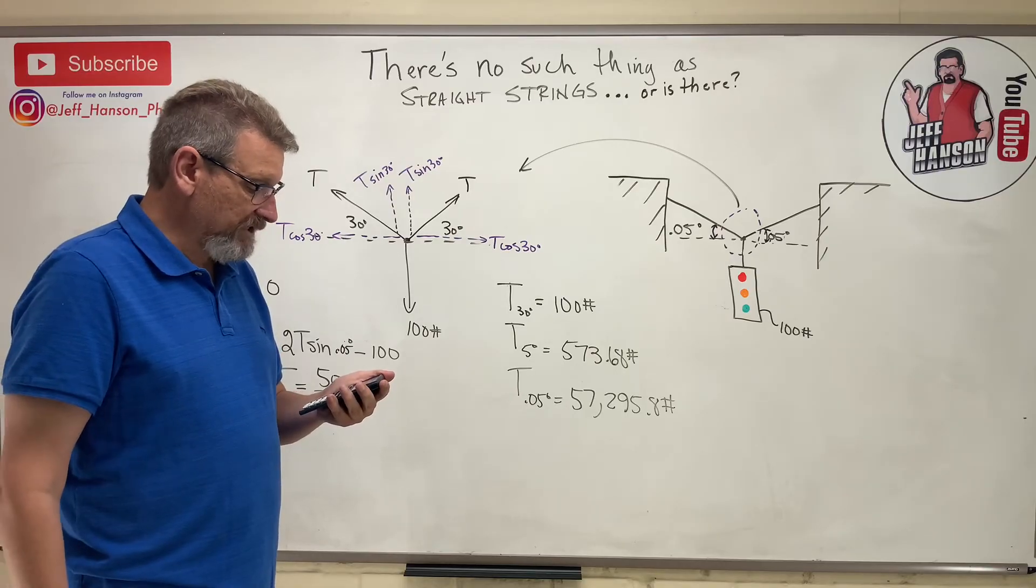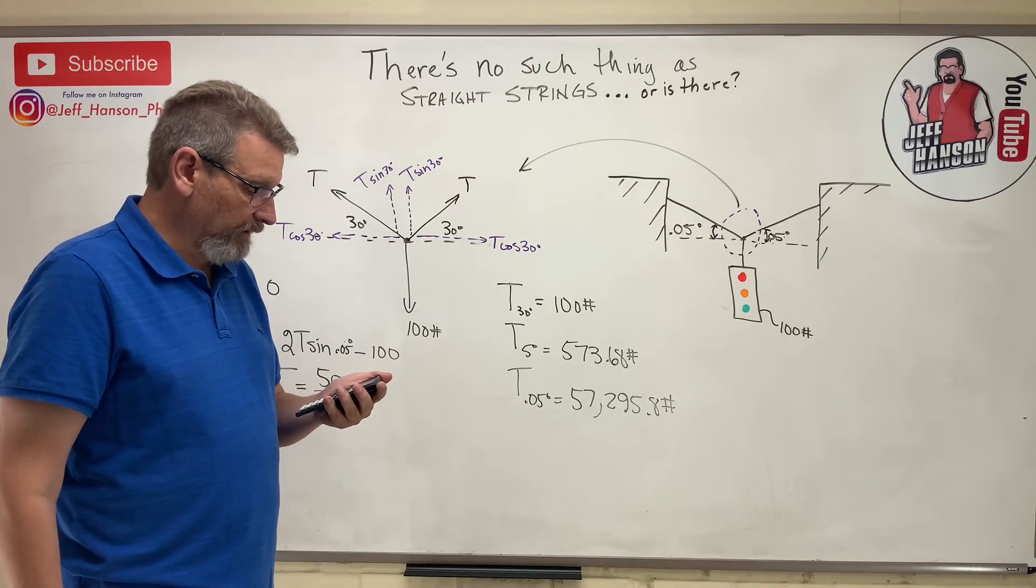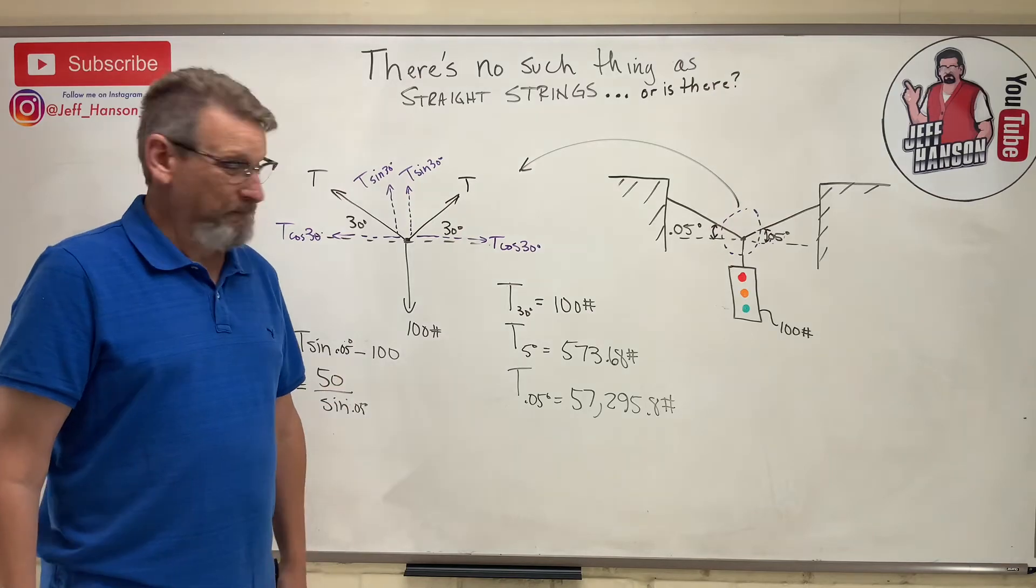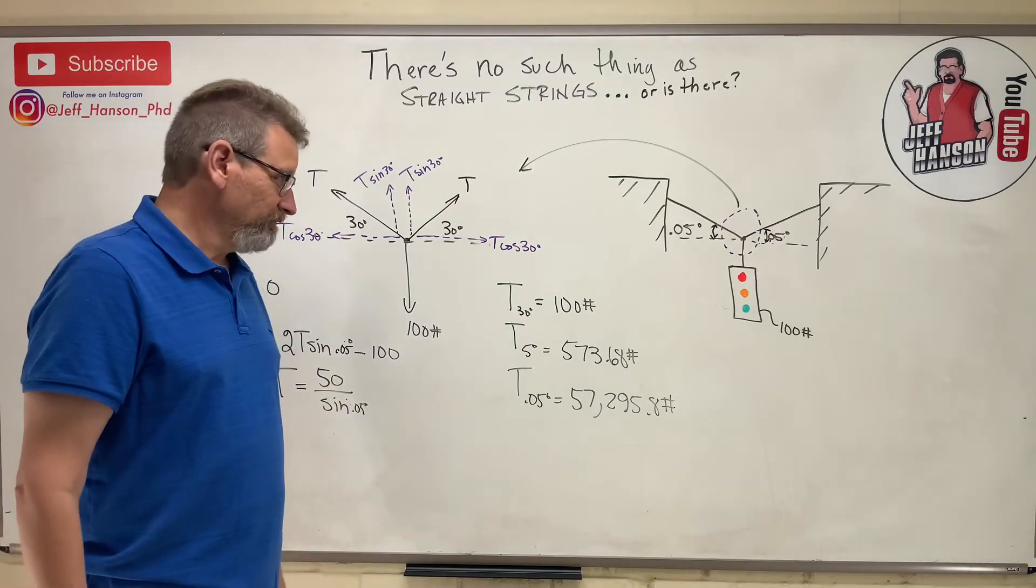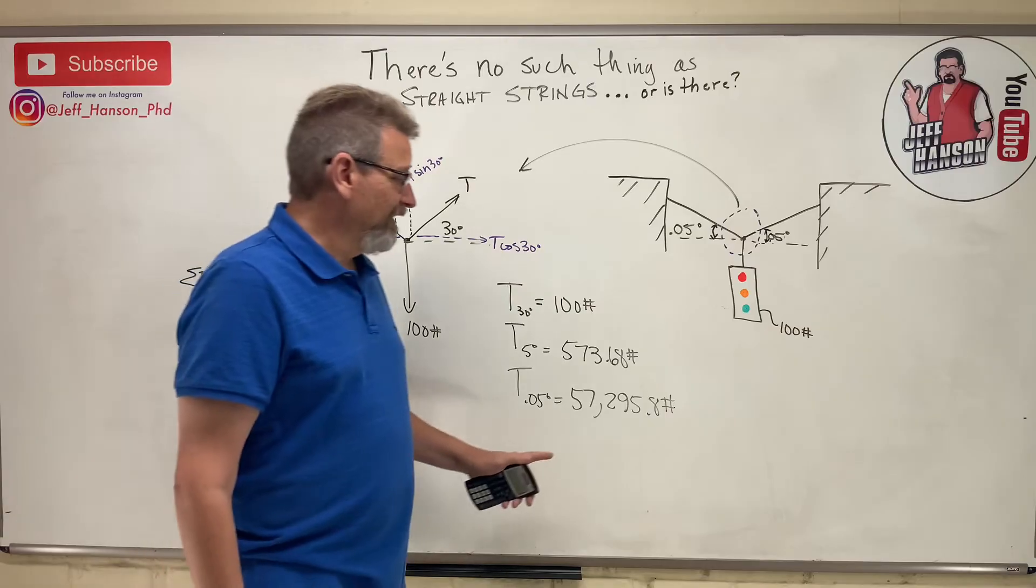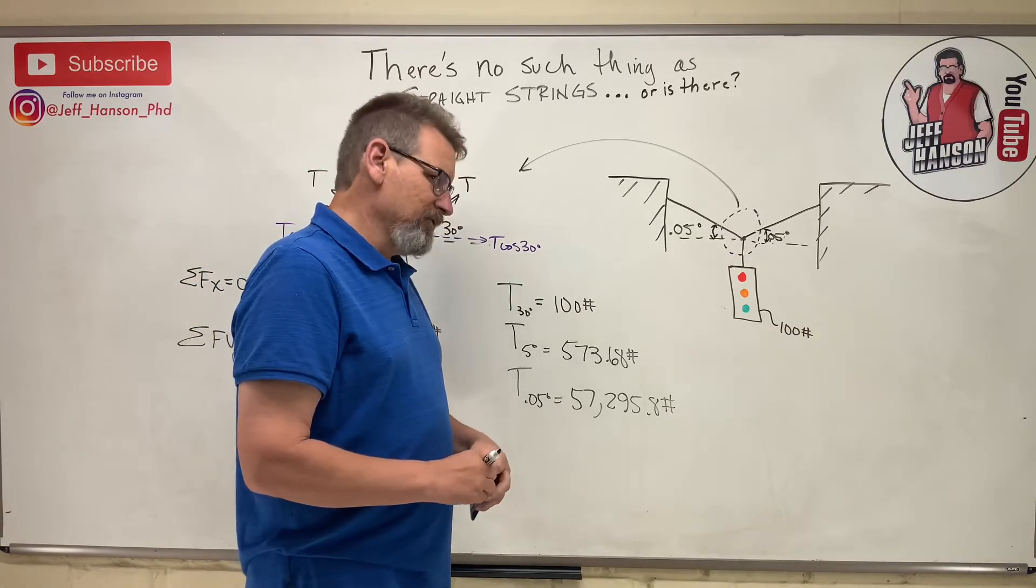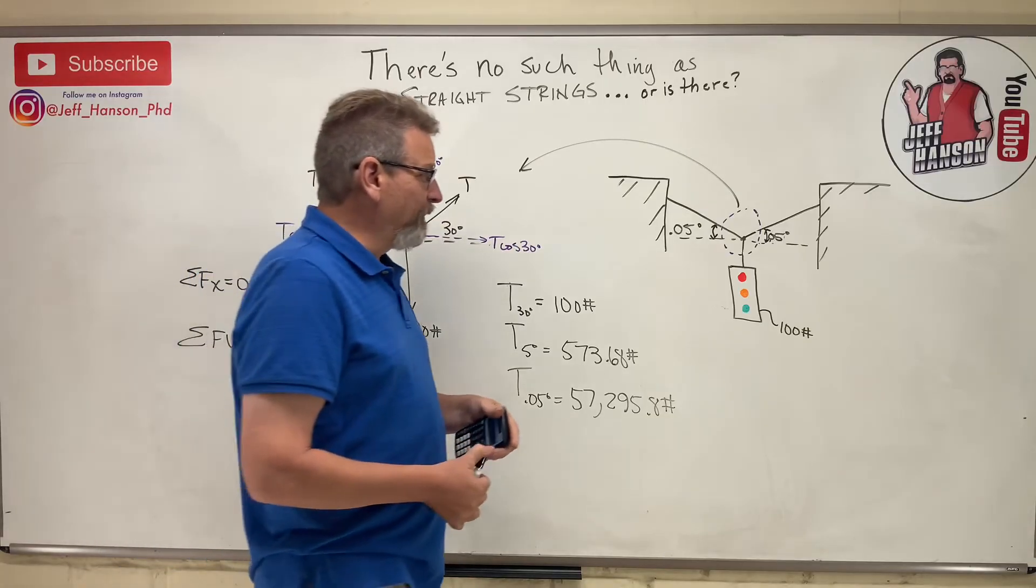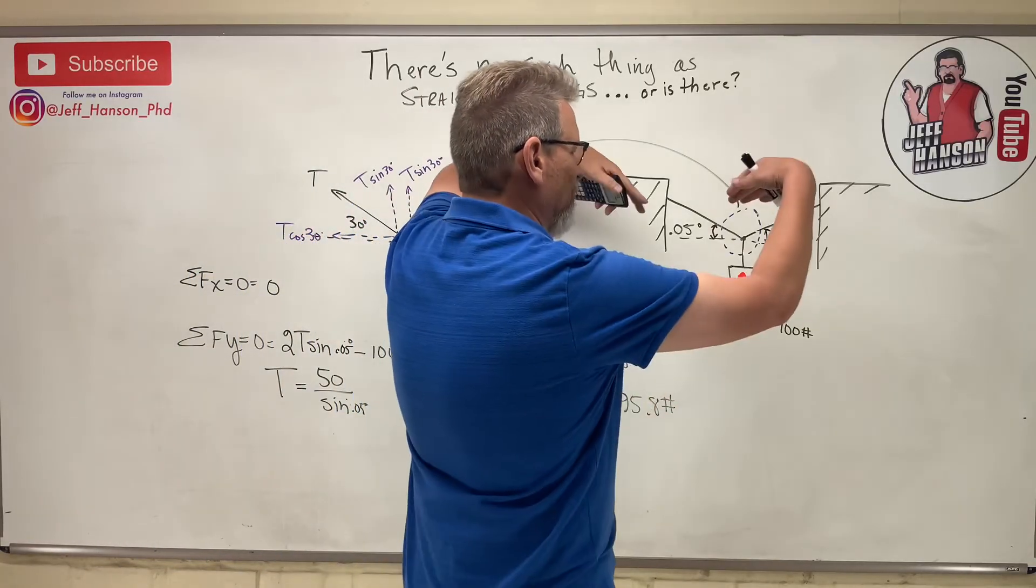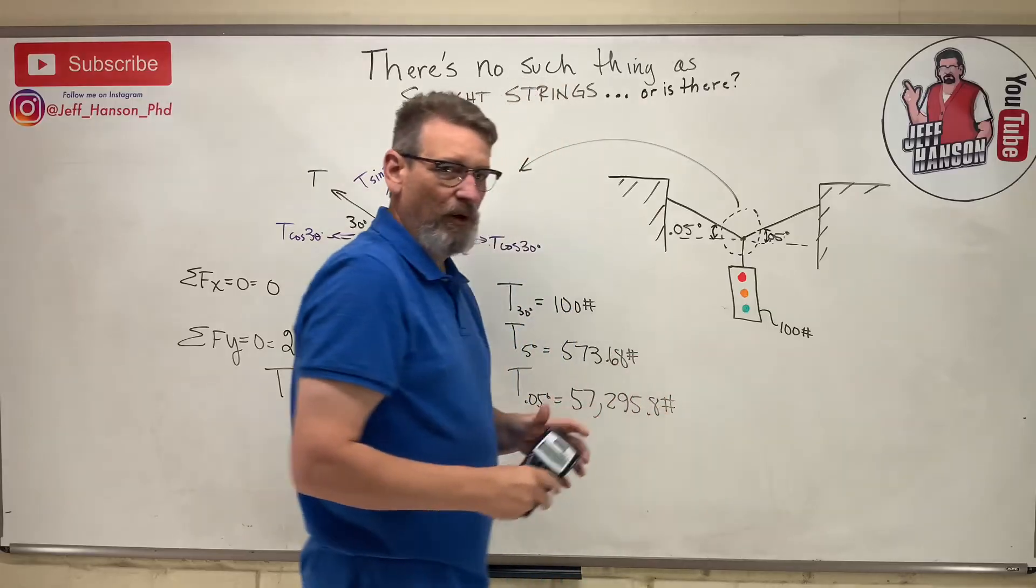Oh my gosh, the tension now is at 5.7 million pounds. 0.005: 5.7 million pounds. So what's happening? As that rope gets closer and closer, as that angle gets closer to zero, what's the tension doing? The tension is going to infinity.